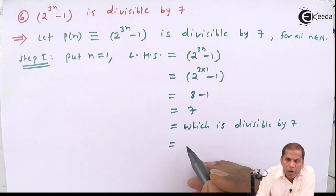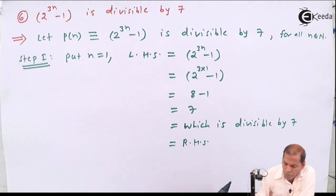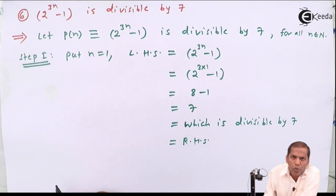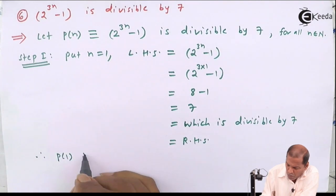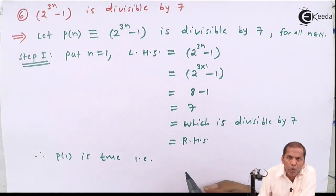And that equals right hand side. Therefore P(1) is true, that is the statement P is true for n equal to 1.